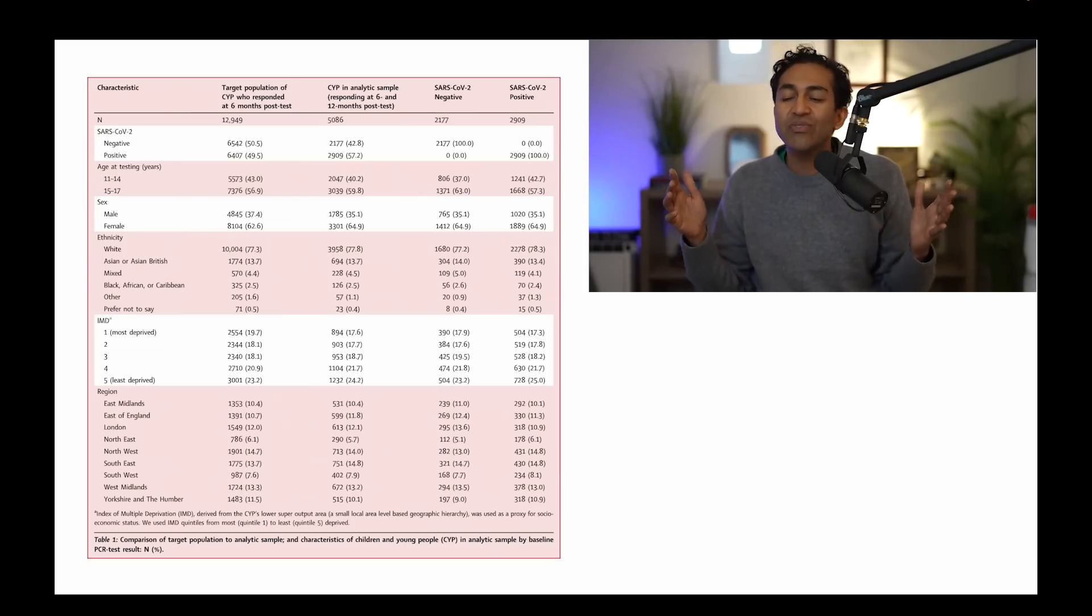It's roughly showing you that it looks like it's kind of balanced. This is different than the prior paper I reviewed on this channel. It looks pretty balanced in terms of socioeconomic deprivation, ethnicity, sex, between the negatives and the positives.